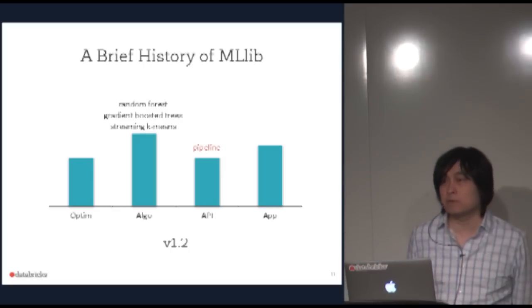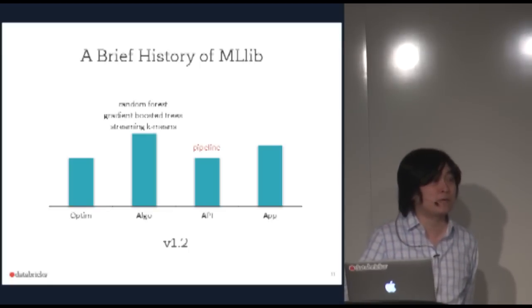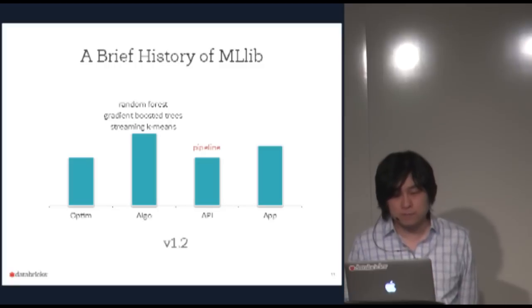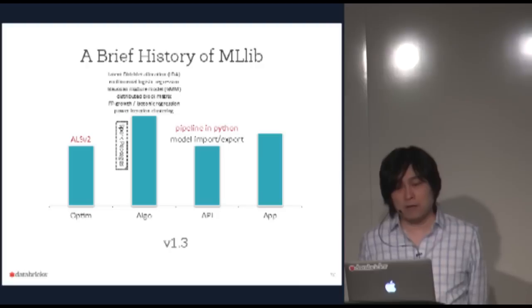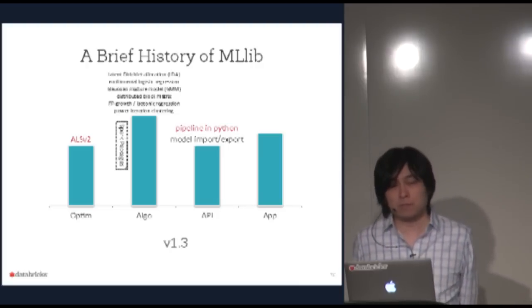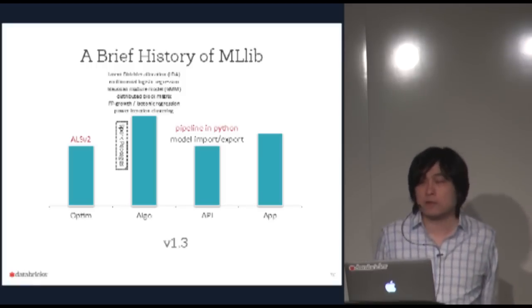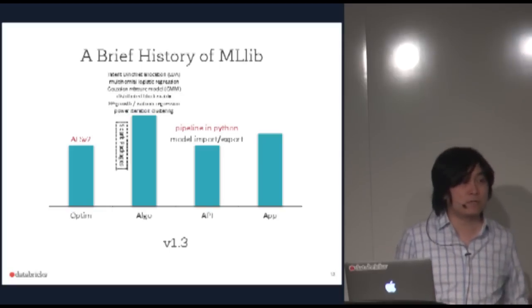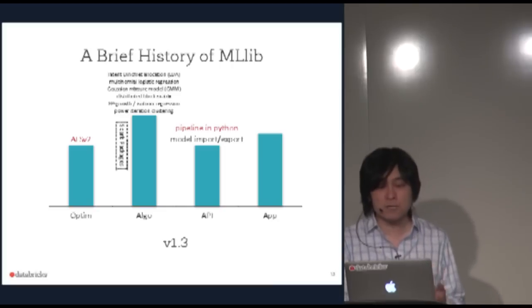In version 1.2 we introduced the Pipeline API, which tried to fill that gap, making it easy for users to build machine learning pipelines. On the algorithm side we added random forest, gradient boosted trees, and streaming k-means. Now with 1.3 released last week, we added LDA for topic modeling, multinomial logistic regression, Gaussian mixture model, isotonic regression, FP-growth for frequent itemsets, and power iteration clustering.